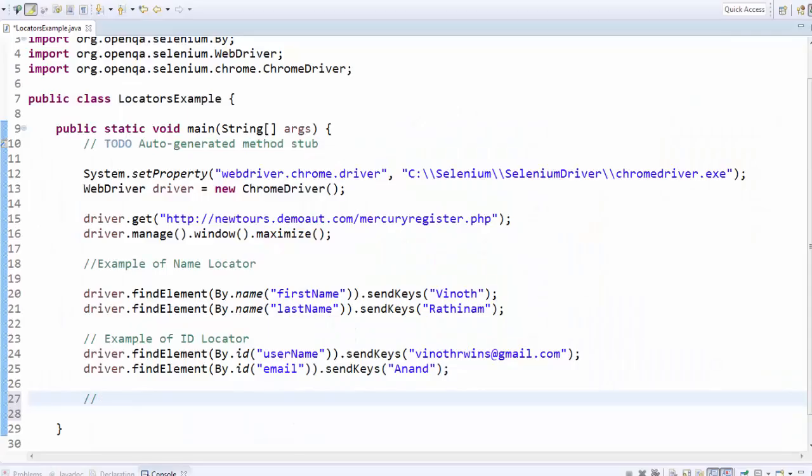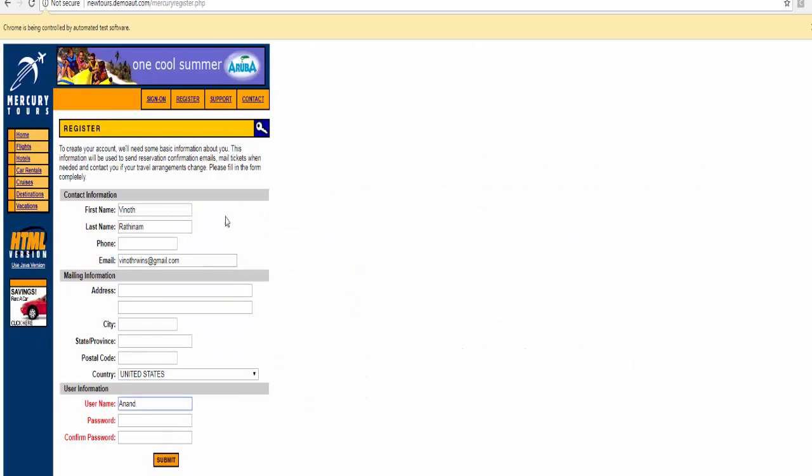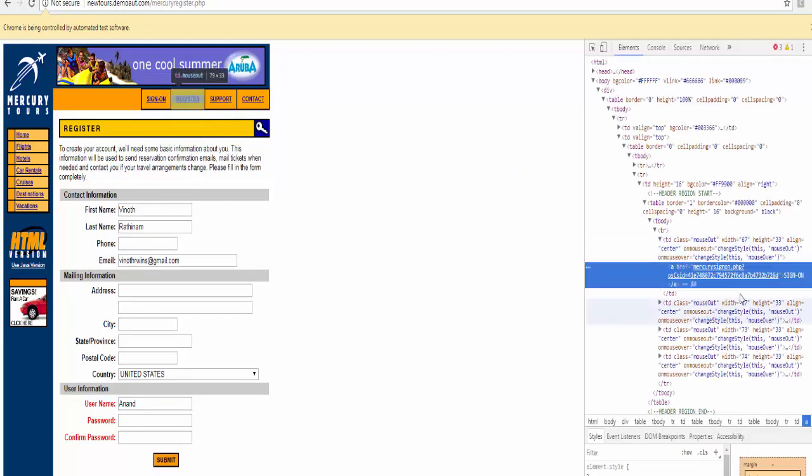The third locator is the link locator. Now the requirement is I have to click on sign on. Just inspect for this web element. You will get href values like that. To use link locator you no need to spy any value. You have to give the exact web element name. Here it is.